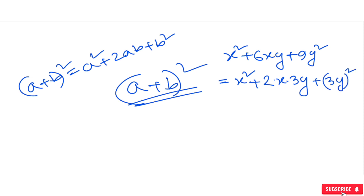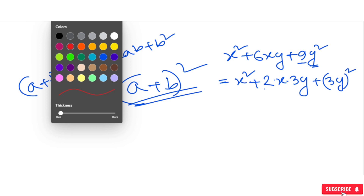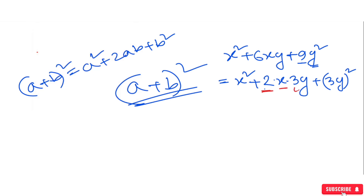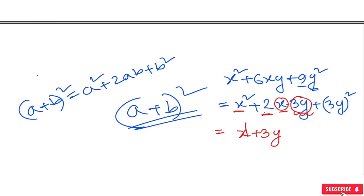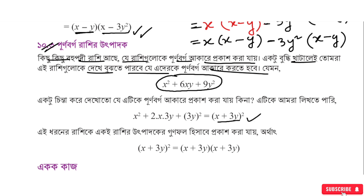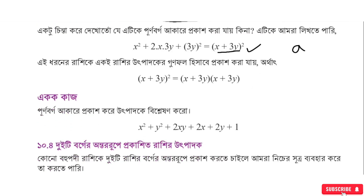For this expression, x is our 'a' and 3y is our 'b'. We press common and recognize it. The result is (x + 3y)² because (a + b)² = a² + 2ab + b², and here a = x and b = 3y. So x² + 6xy + 9y² equals (x + 3y) whole square.